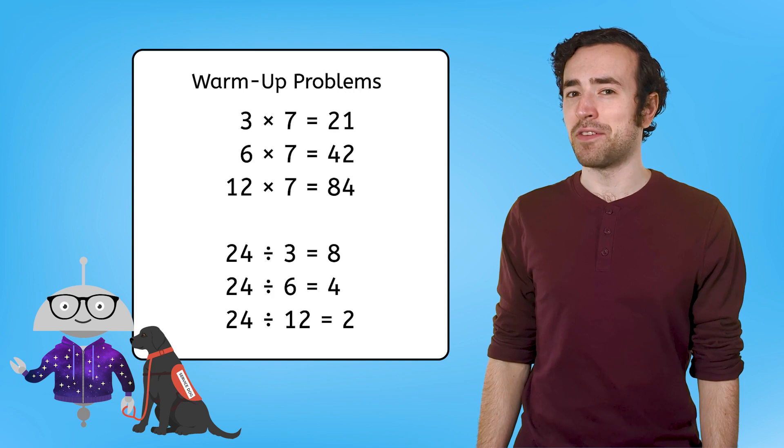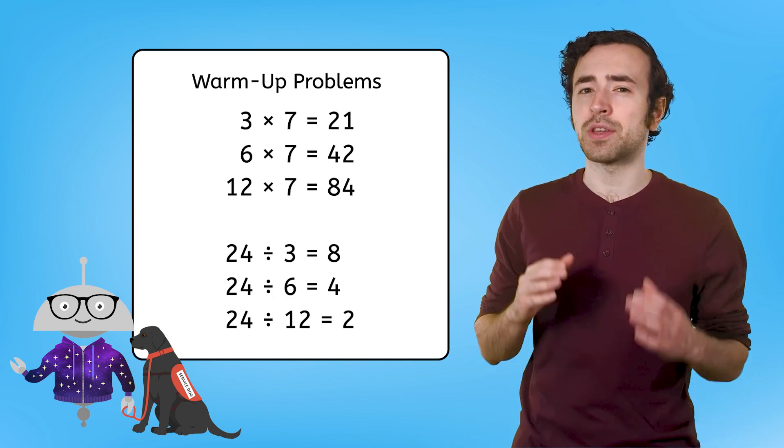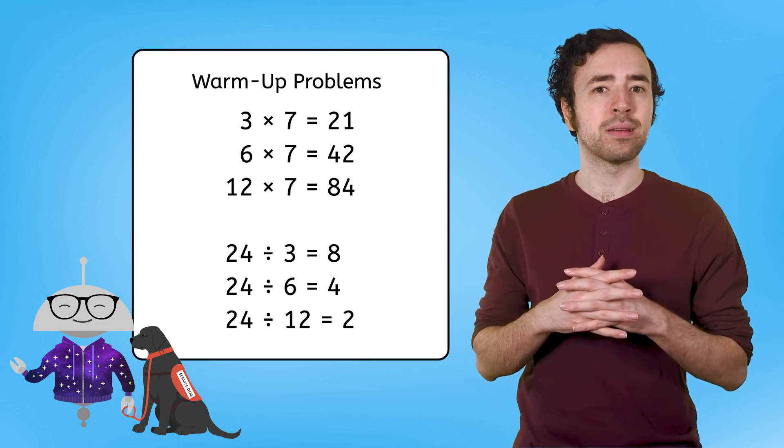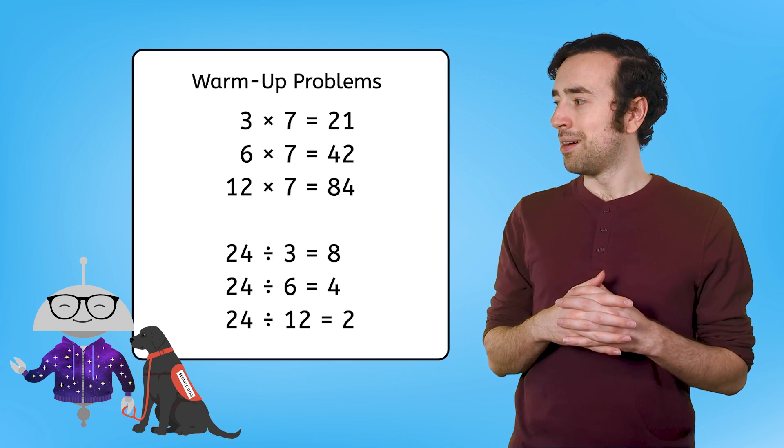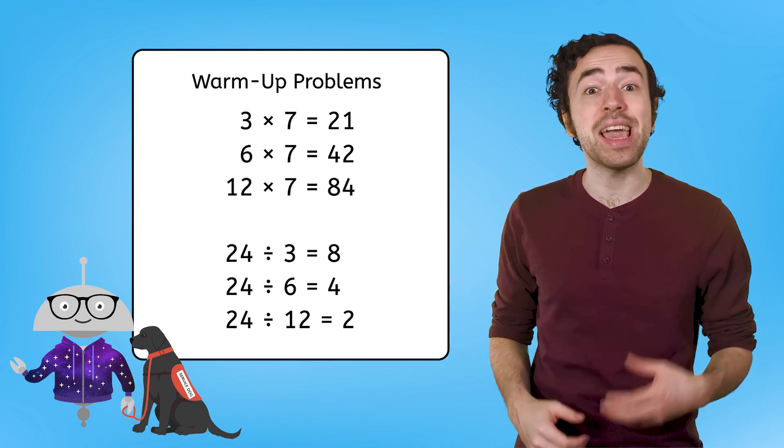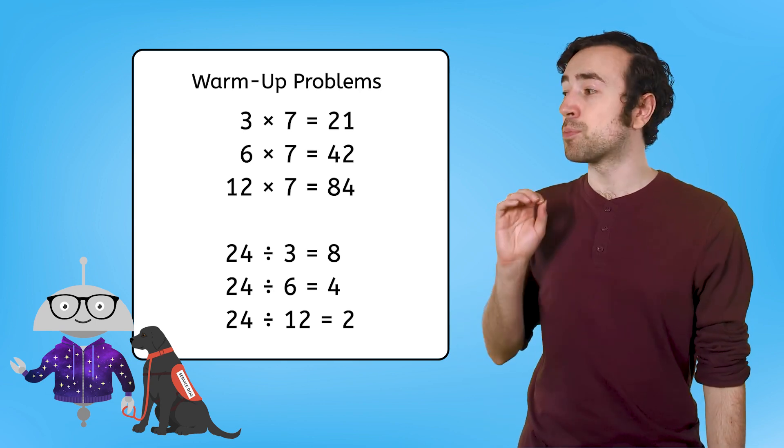This is reminding me of the fact family work we did with Grandpa Nate when we discovered that the 2s, 4s, and 8s fact families are all related. Of course! 12s are related to 6s and 3s, like how Twyla is Felix's sister and Bree's aunt.